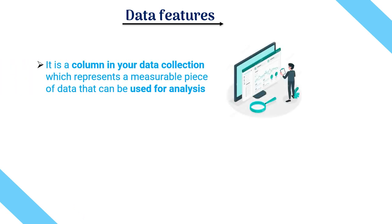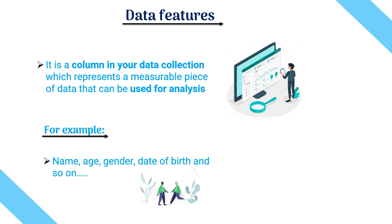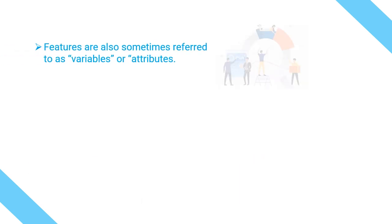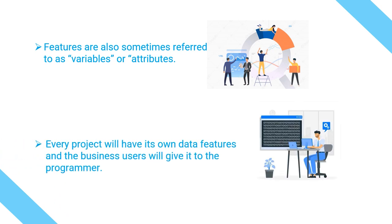Data features are nothing but columns in your data collection, representing a measurable piece of data that can be used for analysis. Examples include name, age, gender, date of birth, and so on. Data features are also sometimes referred to as variables or attributes. Every project will have its own data features, and business users will provide these to the programmer.